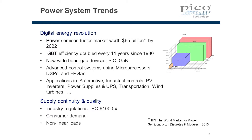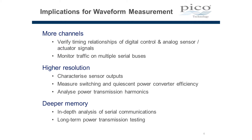That has a number of implications for people who are making measurements of those waveforms. Embedded system developers need to measure waveforms on more channels than before — traditionally oscilloscopes had either two or four analog channels. We're needing to measure more than four channels these days, and with higher resolution. 8 bits gives 256 levels and in many cases that's not enough for some of those sensors and power applications. It's also useful to see waveforms over long periods of time with good timing resolution.